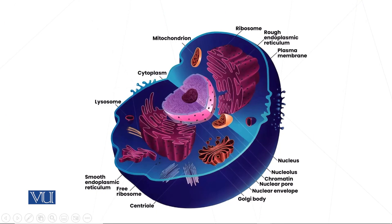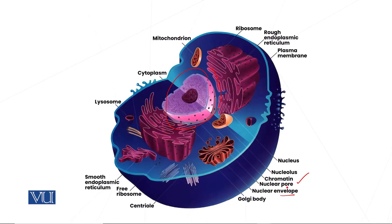Now we are going to discuss about the characteristics of the eukaryotic cell diagrammatically. The eukaryotic cell in the center has the nucleus. The nucleus structure involves the nuclear membrane, also known as the nuclear envelope, which has nuclear pores. The nucleus itself has the nucleolus, which is the ribosome factory.